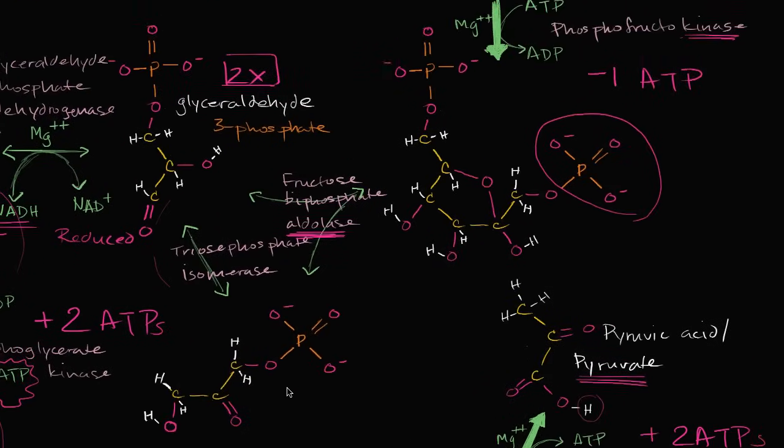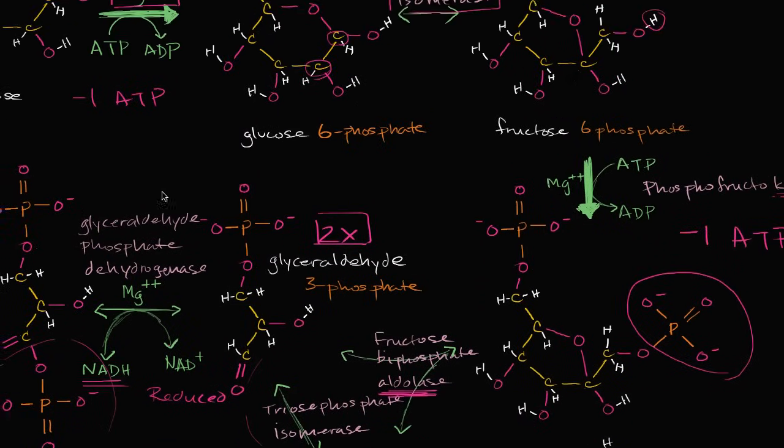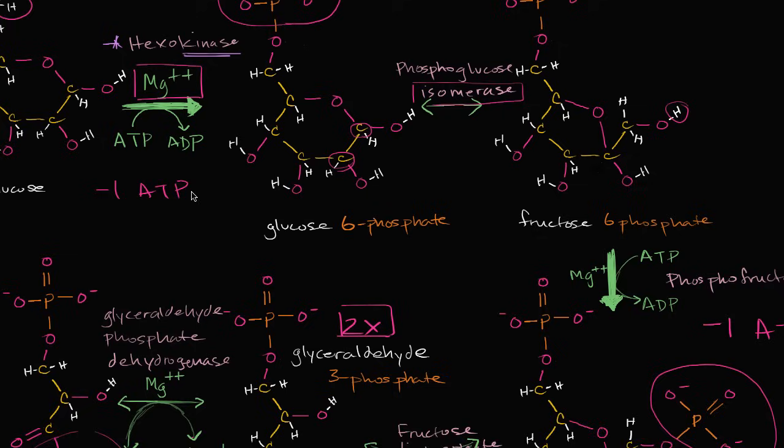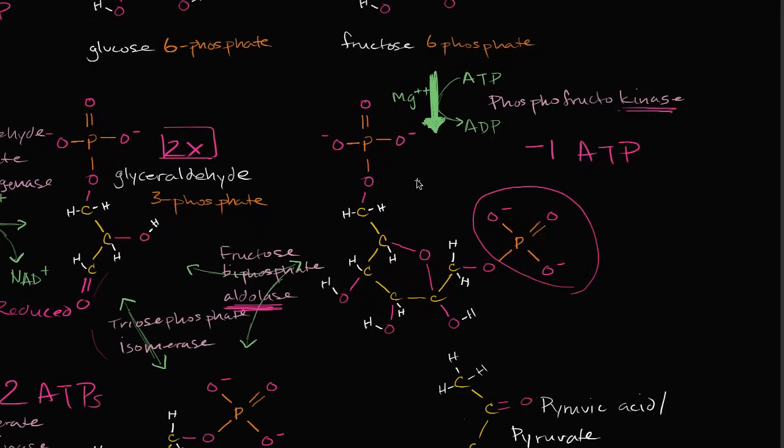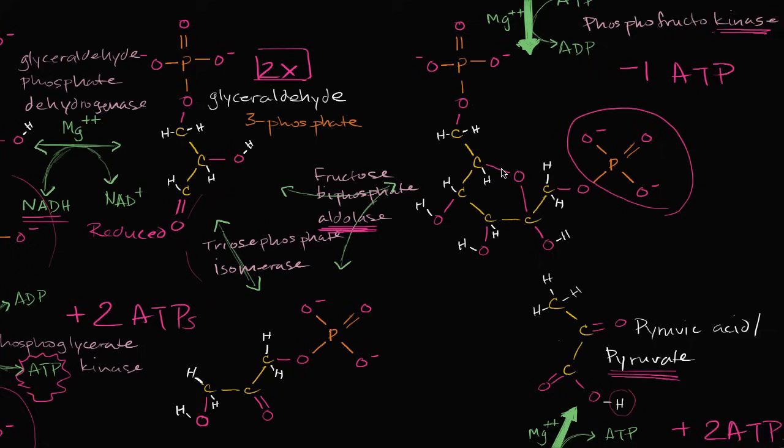So hopefully you see the investment phase. We use an ATP right over here to phosphorylate the glucose. We use another ATP right over here to throw that second phosphate group on the what was the fructose 6-phosphate.